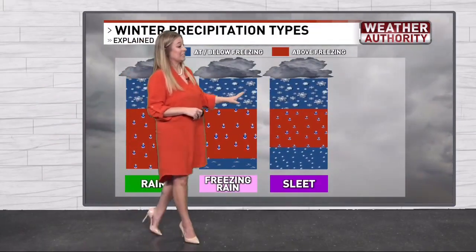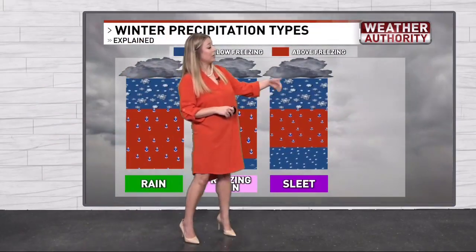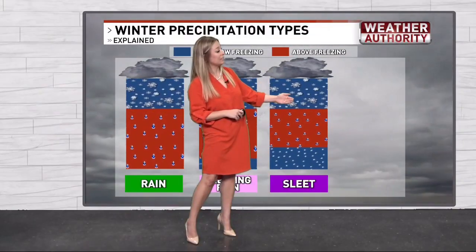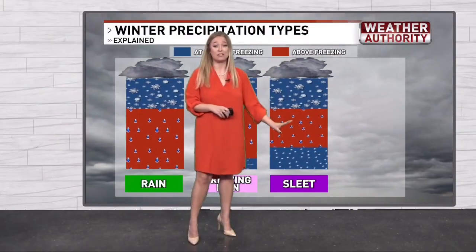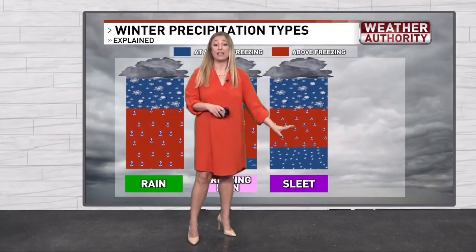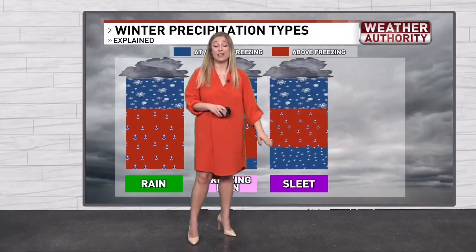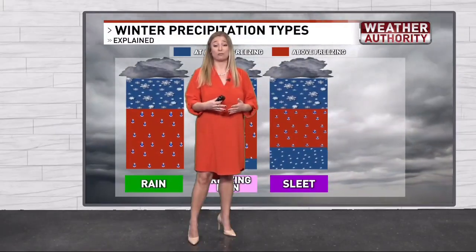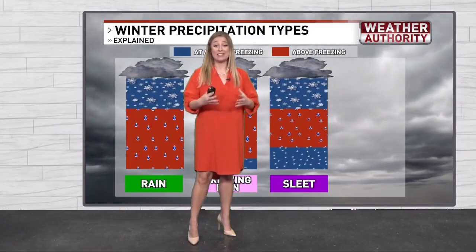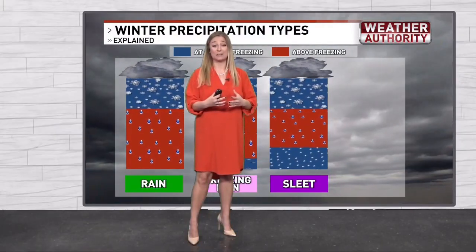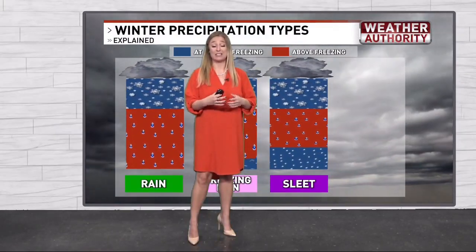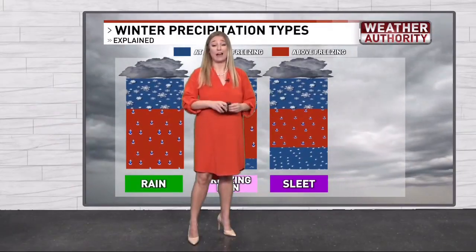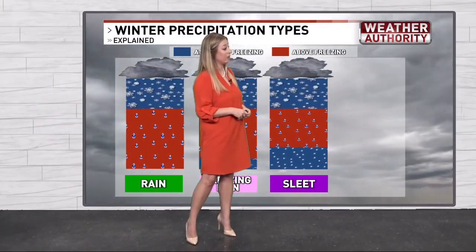Next is sleet. Again, we have snow falling from the cloud base staying in that freezing layer. It melts into rain, but then we have a freezing layer just above the surface so that rain freezes into little ice pellets, and that's when you see those sleet pellets bouncing off the ground as it falls.